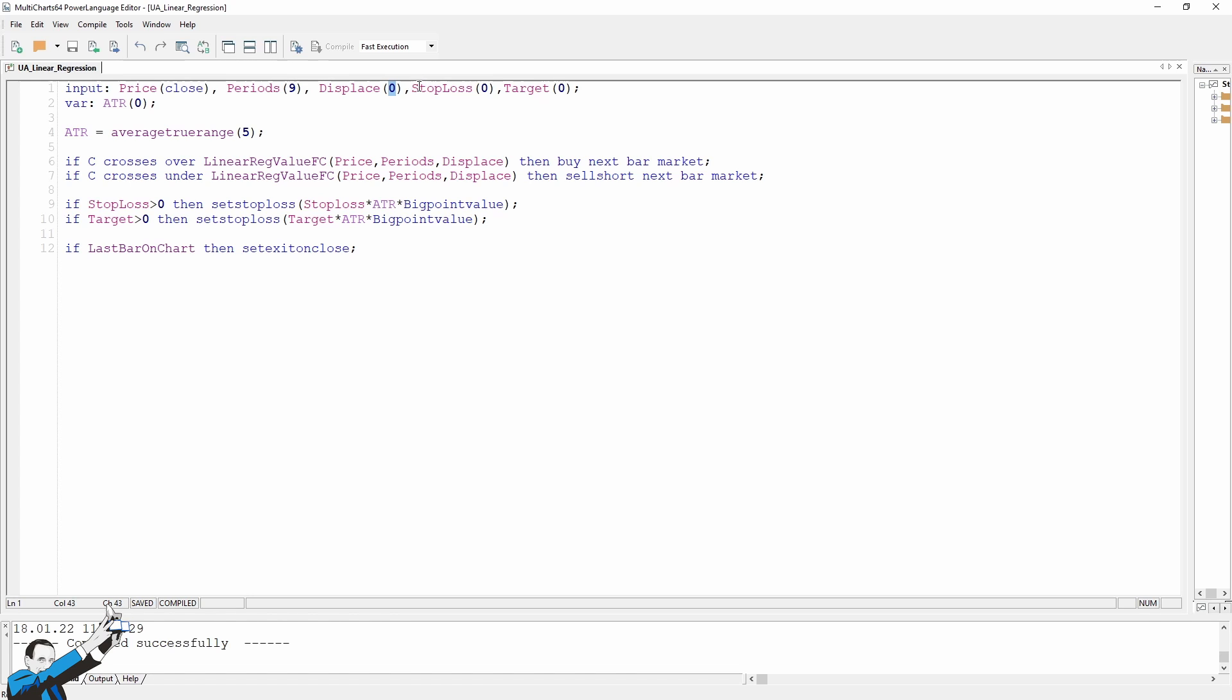And then two other inputs, stop loss and target, which will then be calculated on the ATR, which is the only variable that I created, simply by calling this function of the average true range calculated at 5 periods. As said, here we'll have the entry conditions. So, if we have a close above the linear regression point, we'll basically buy at the next bar to market in continuation of trend. And vice versa, when the close will break down the level of the linear regression, then we'll sell at the next bar.